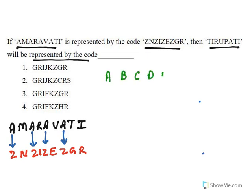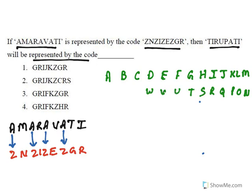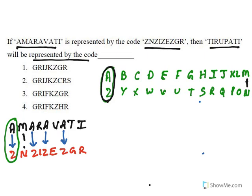The first 13 alphabets are A, B, C, D, E, F, G, H, I, J, K, L, M, and the second 13 are N, O, P, Q, R, S, T, U, V, W, X, Y, Z. A is replaced with Z, M is replaced with N, R is replaced with I, V is replaced with E, and T is replaced with G. So alphabets from one set are paired with corresponding alphabets from the back of the other set.